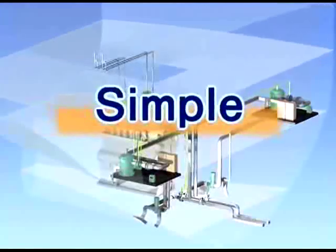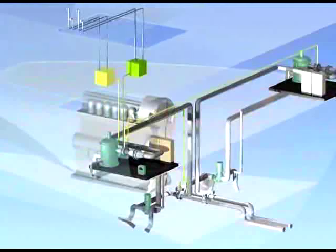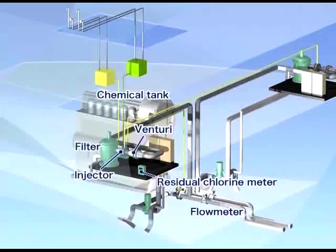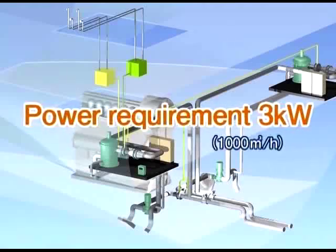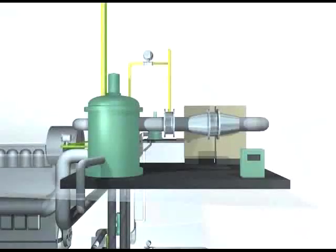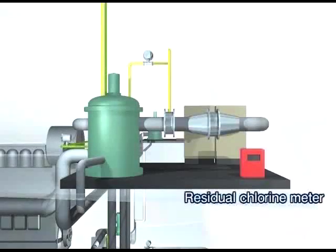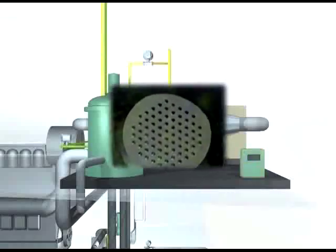Simple — a simple system with a compact design. The JFE Ballast Ace system is extremely compact; the unit can easily be installed in the limited space of a machine room. Because the equipment requires only about 3 kilowatts of power, it is not necessary to increase the ship's generator capacity. Because the chemical injection rate is controlled automatically by the residual chlorine meter, operation is simple and does not place an extra burden on the crew.